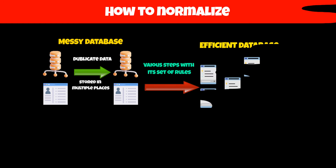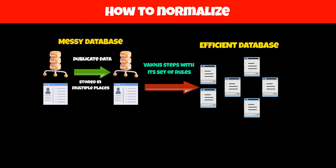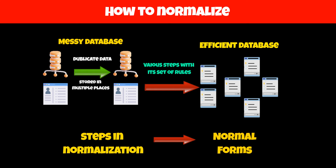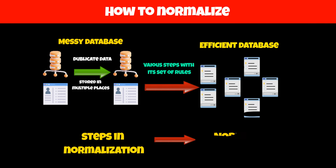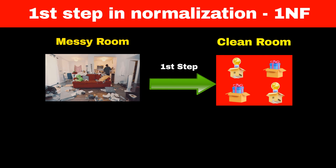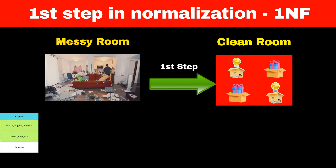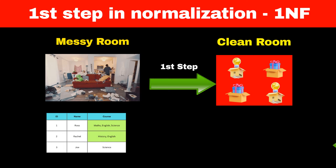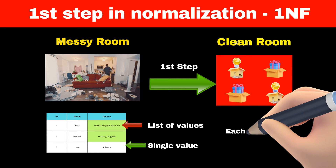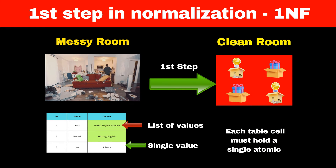Normalization follows a series of steps to improve the efficiency of a database. Each step contains its own set of rules, and these steps are called normal forms. The first step is to keep things simple — like keeping one item per box. In database terms, each cell should only contain one piece of information. No list or group of information should be put together in a cell. This first step, which says each cell must hold a single atomic value, is called first normal form.